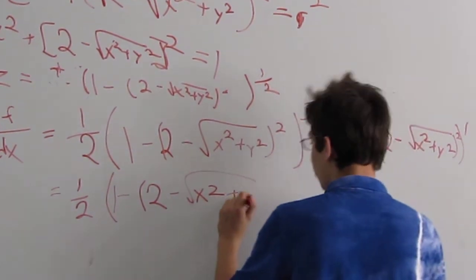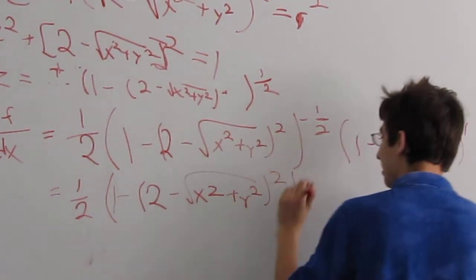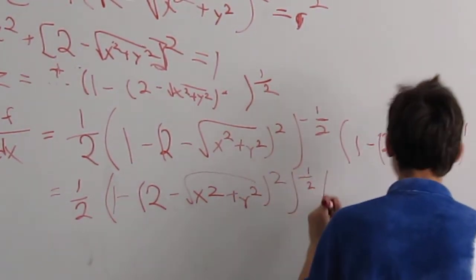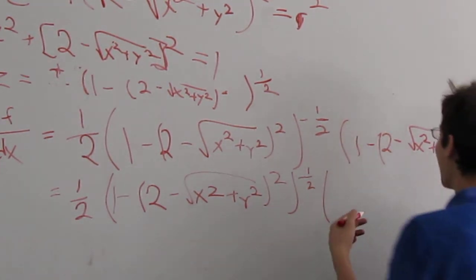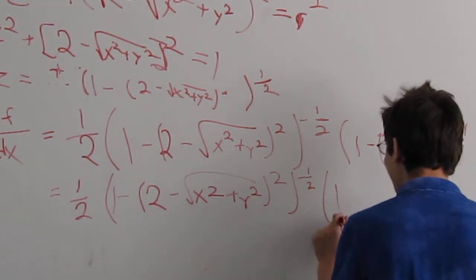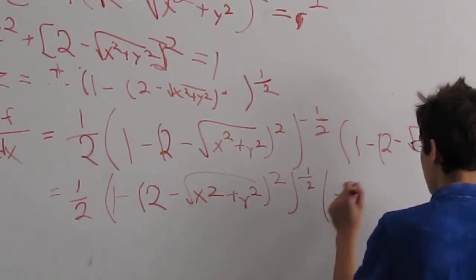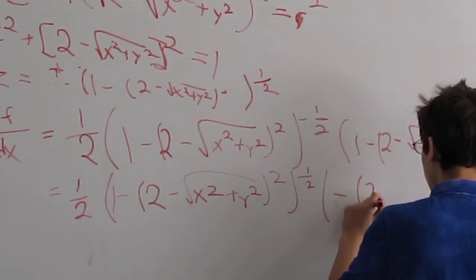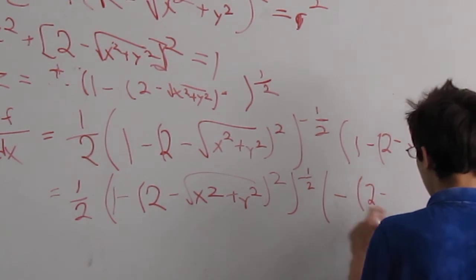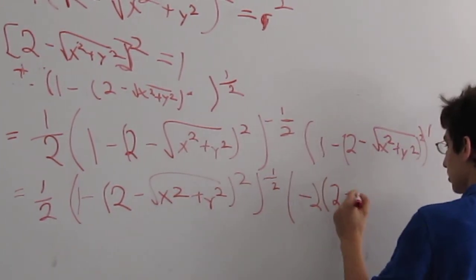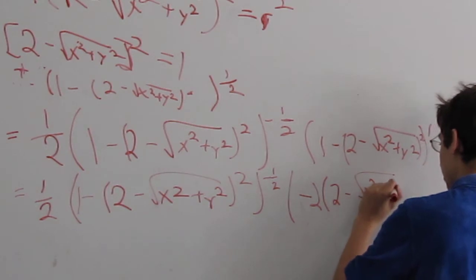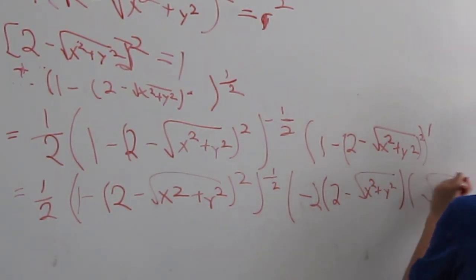I'm sure you've all heard the story of the torus and the hare, right? That was a joke, you can laugh. Alright, and that, the 1 goes to 0 when you take the derivative of that. So, it's just negative 2 times 2 minus square root of x squared plus y squared times the derivative of x squared plus y squared.